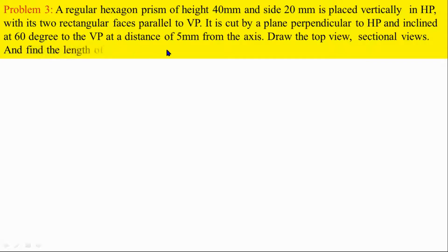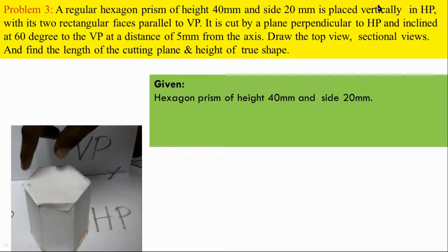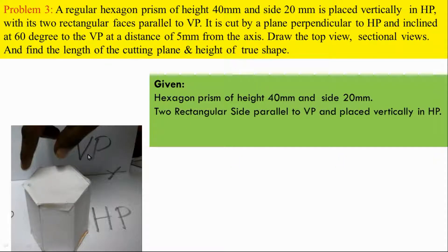If you want to move further to problem no.15, it is very easy to do. First, consider what solid we have — the hexagonal prism. The hexagonal prism has a given height and side. Now, if the rectangular face is VP parallel, then the base sides are also VP parallel.